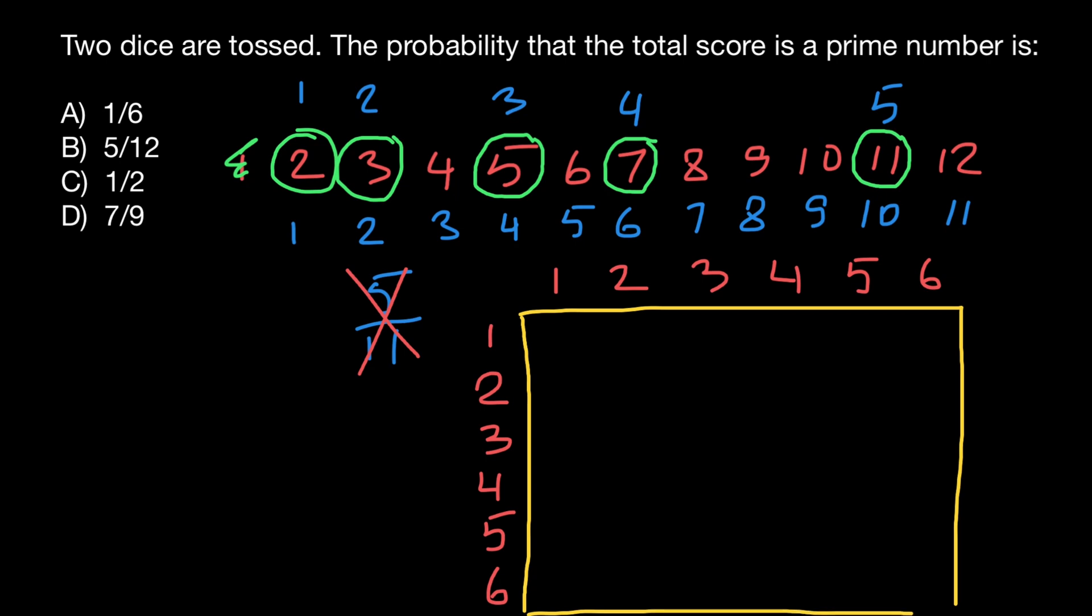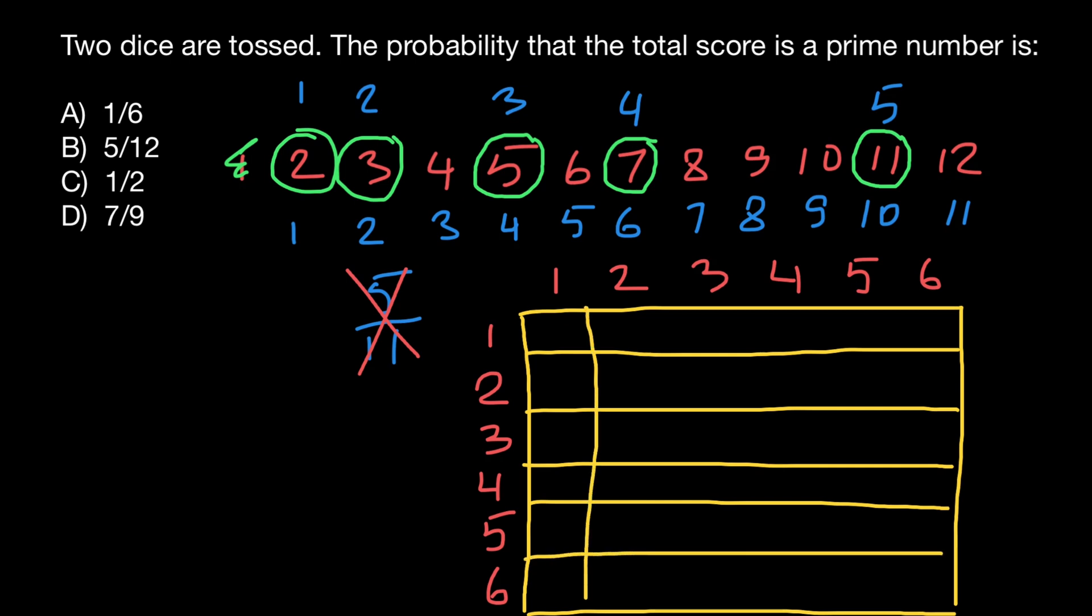So we are going to have six rows. And we are going to have six columns. So one, two, three, four, five, and six. Now let me put all the numbers inside.